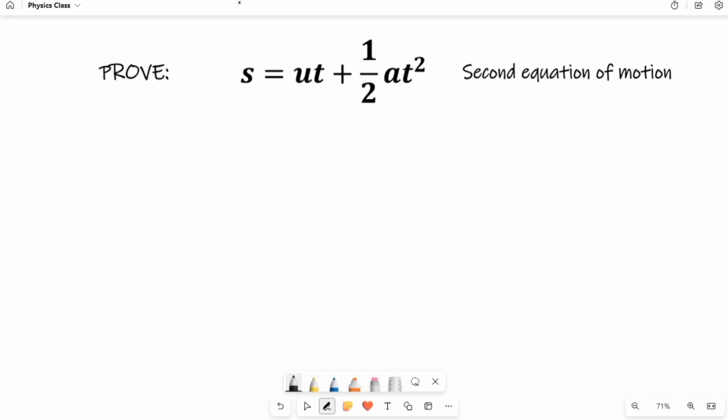We have proved the first equation of motion, you can find the video in the description. So let's start. We have to prove s equals ut plus half at squared.